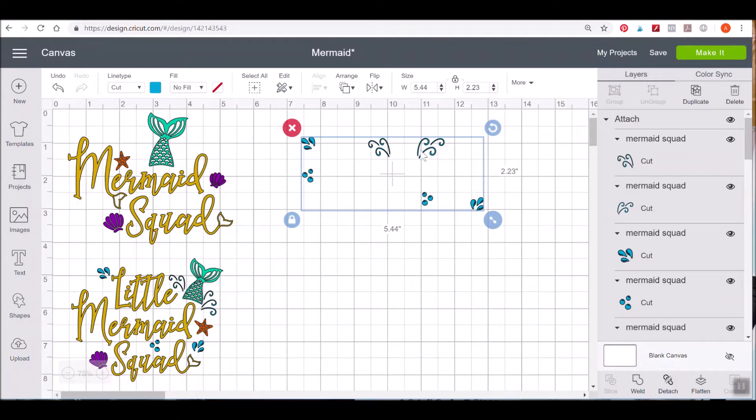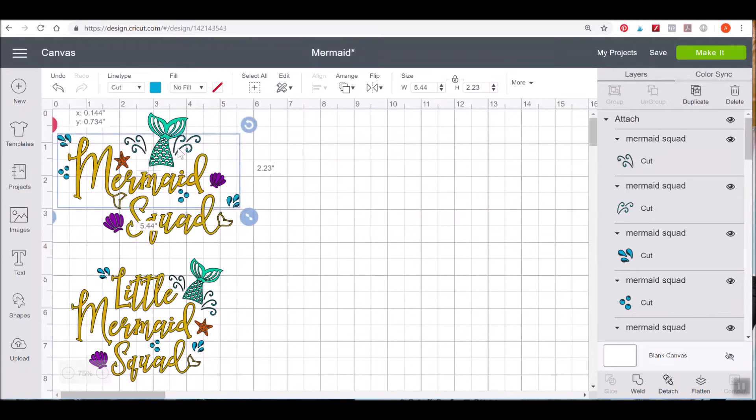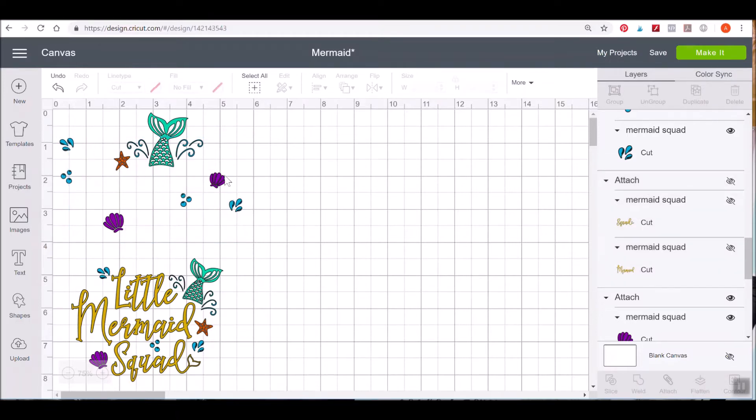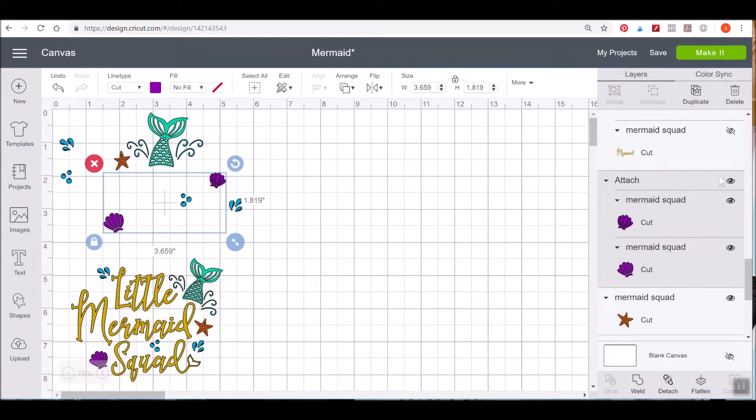The easiest way to do that when you're working with trying to keep the file as it is is just to hide pieces as you need to. If I select Mermaid Squad, the actual writing over here in the layers panel, you'll see that it's highlighted here. Just click that off and it hides it.